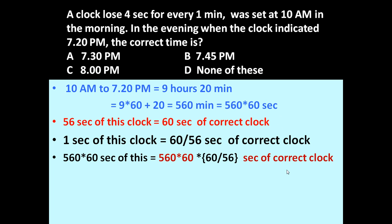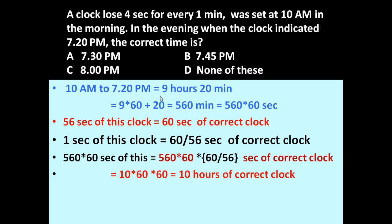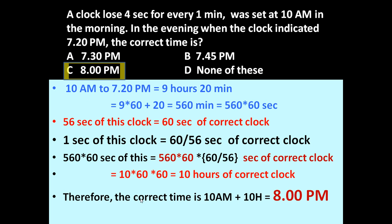This equals 10 × 60 × 60 seconds, which equals 10 hours of the correct clock. So when this faulty clock is showing 9 hours and 20 minutes, the correct clock will show 10 hours. The clock was set at 10 am in the morning, so the correct time is 10 am + 10 hours = 8 pm. When this clock is showing 7:20 pm, the correct clock will show 8 pm.